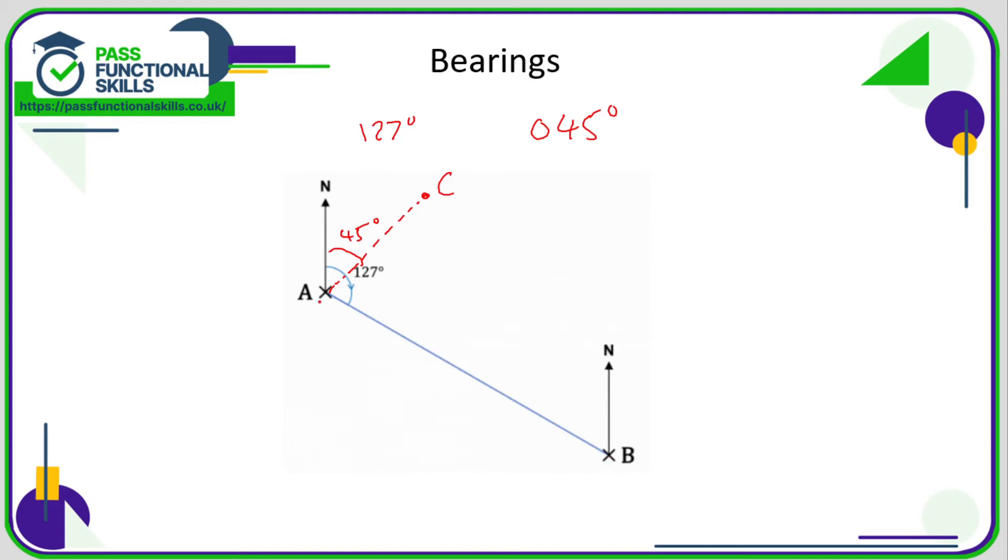If you wanted the bearing of A from B, that means you're at B. What bearing do you need to go on to get to A? So the bearing would be this angle here, and that angle there is simply this angle here with 180 added on or taken away. You need an angle between 0 and 360. So 127 plus 180, that is a bearing of 307 degrees.